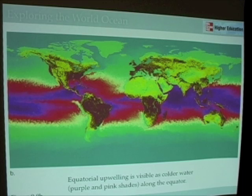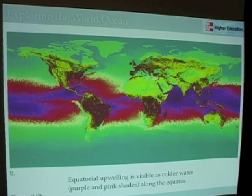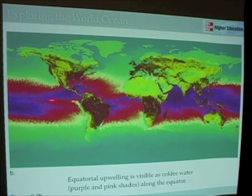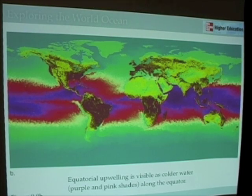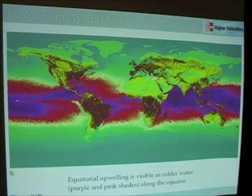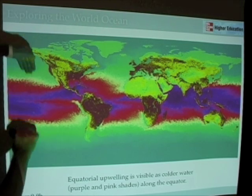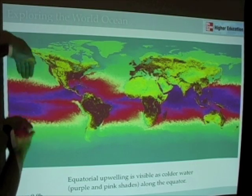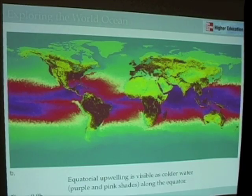Here's what it looks like on a world ocean basis. You can see colder tongues of water — note the colors are reversed here; the coldest waters are shown in red, and the pinks and purples are the hotter waters. You can see tongues of upwelling in both the equatorial Pacific and the equatorial Atlantic, caused by wind-directed Ekman Transport, surface divergence, and colder water coming up to replace it.